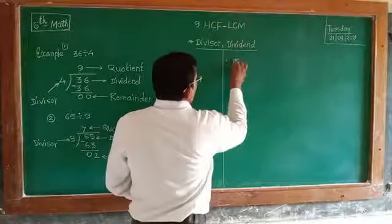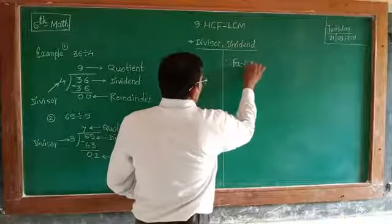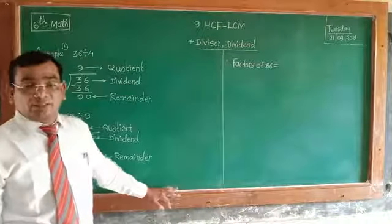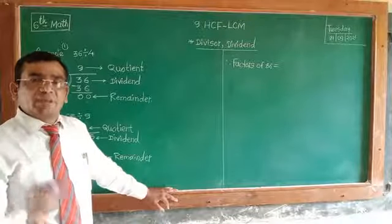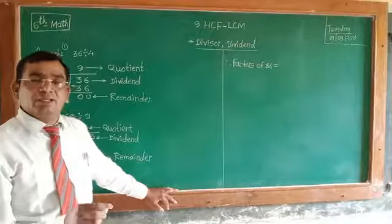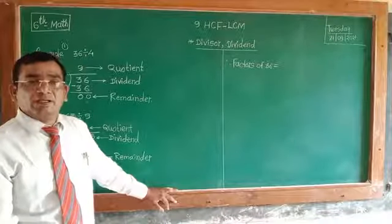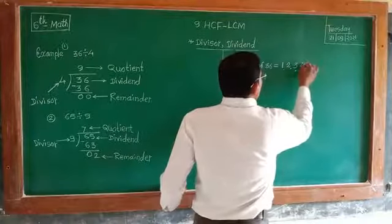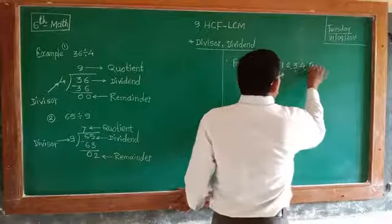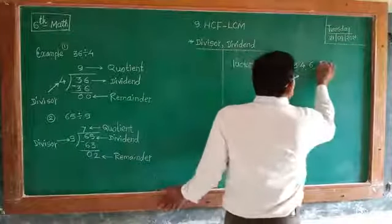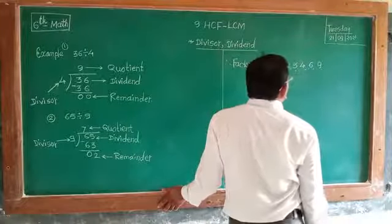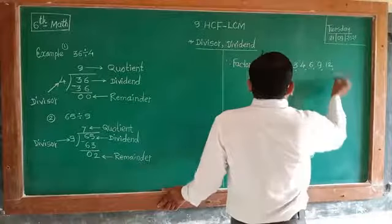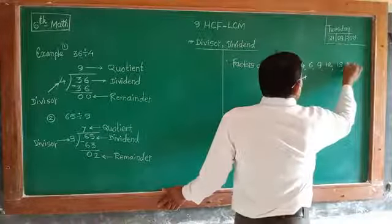The factors of 36 are: 1, 2, 3, 4, 6, 9, 12, 18, and 36.